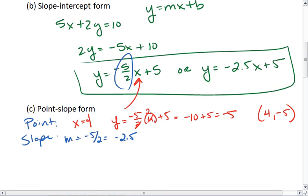That gives me the point 4 comma negative 5. Now, I can take all of this and plug it into the general equation of y minus y1 equals m times x minus x1, where our point is x1, y1 and our slope is m.